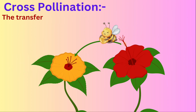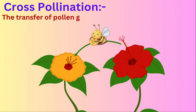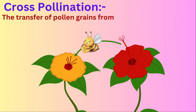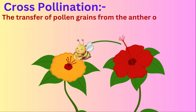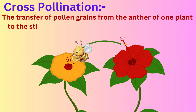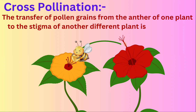Cross-pollination is the transfer of pollen grains from the anther of one plant to the stigma of another different plant. Examples include grass and maple.